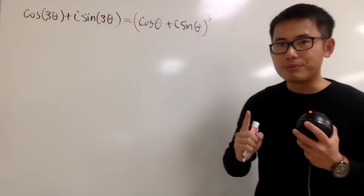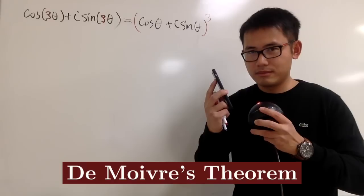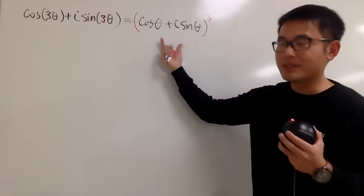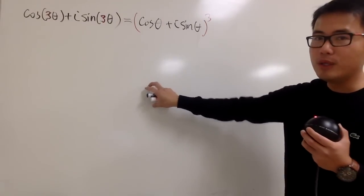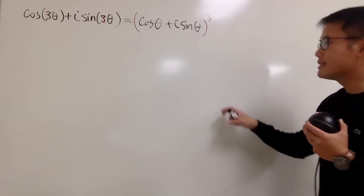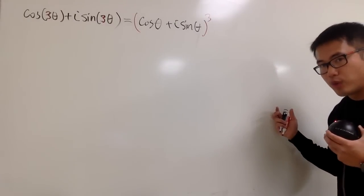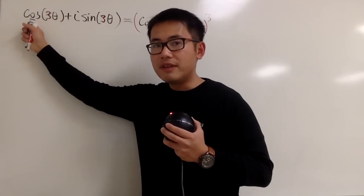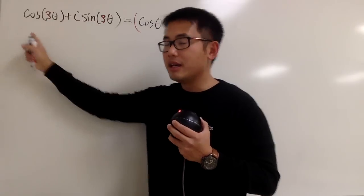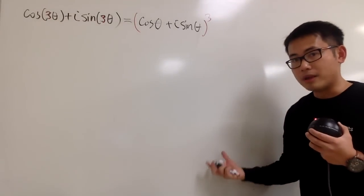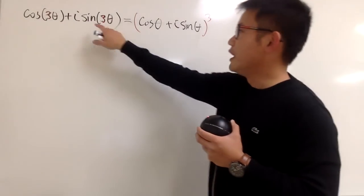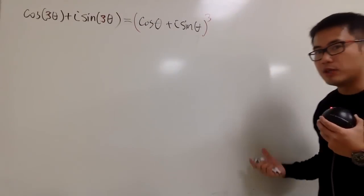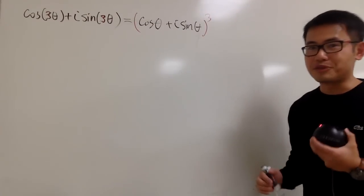This is true by De Moivre's theorem. On the right-hand side, we can multiply this out and collect all the real parts together, and likewise collect the imaginary parts. The real part on the left-hand side has to equal the real part on the right-hand side. Similarly, the imaginary part on the left has to equal the imaginary part on the right. So that's the strategy.